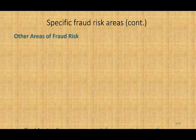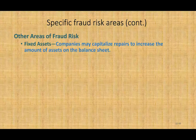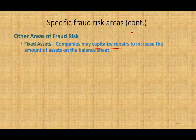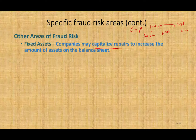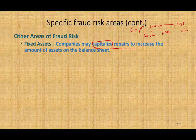Other specific fraud areas include fixed assets. Companies may capitalize repairs to increase the amount of the asset. When you spend money repairing an asset — say $100,000 — that should be expensed. Instead, the company debits an asset and credits cash, capitalizing the expenditure. This is what WorldCom did — they capitalized expenditures. By debiting an asset rather than an expense, it doesn't reduce income now; it would reduce income later when the asset is depreciated.